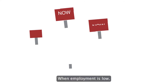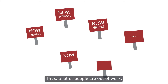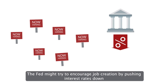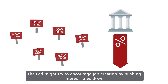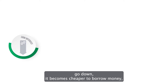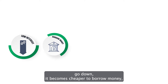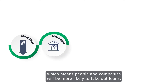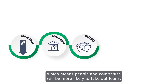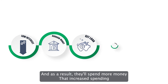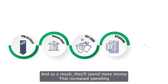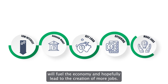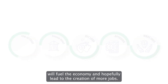When employment is low — meaning a lot of people are out of work — the Fed might try to encourage job creation by pushing interest rates down. When interest rates go down, it becomes cheaper to borrow money, which means people and companies will be more likely to take out loans, and as a result, they'll spend more money. That increased spending will fuel the economy and hopefully lead to the creation of more jobs.